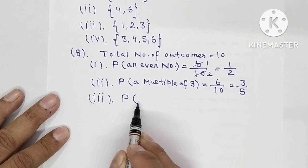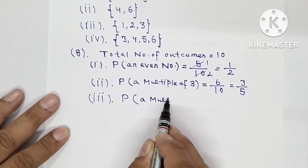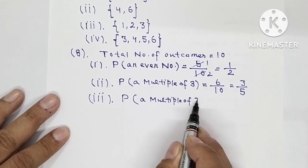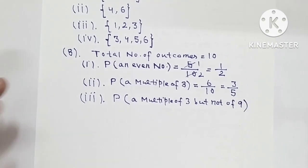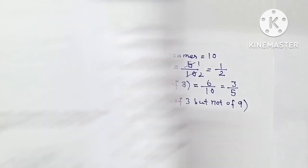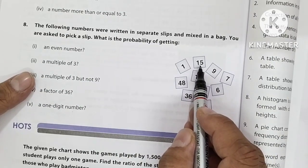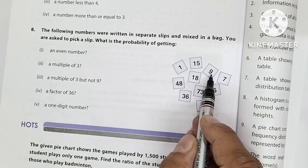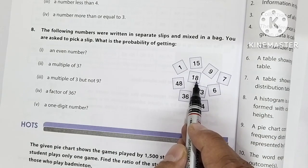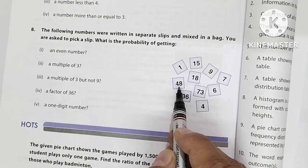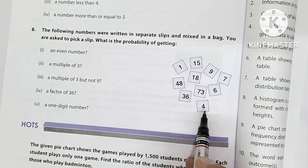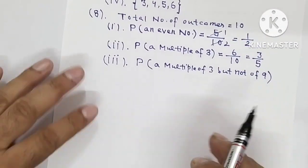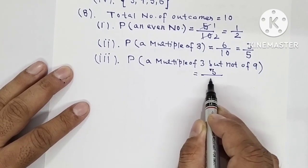Third part — probability of a multiple of 3 but not of 9. From the multiples of 3, we exclude those that are also multiples of 9. After checking: 15 is a multiple of 3 but not 9, so we count it. Some numbers are multiples of 9 so we skip those. Then 48 and 6 are also multiples of 3 but not 9. That gives us 3 outcomes, so the probability is 3 over 10.